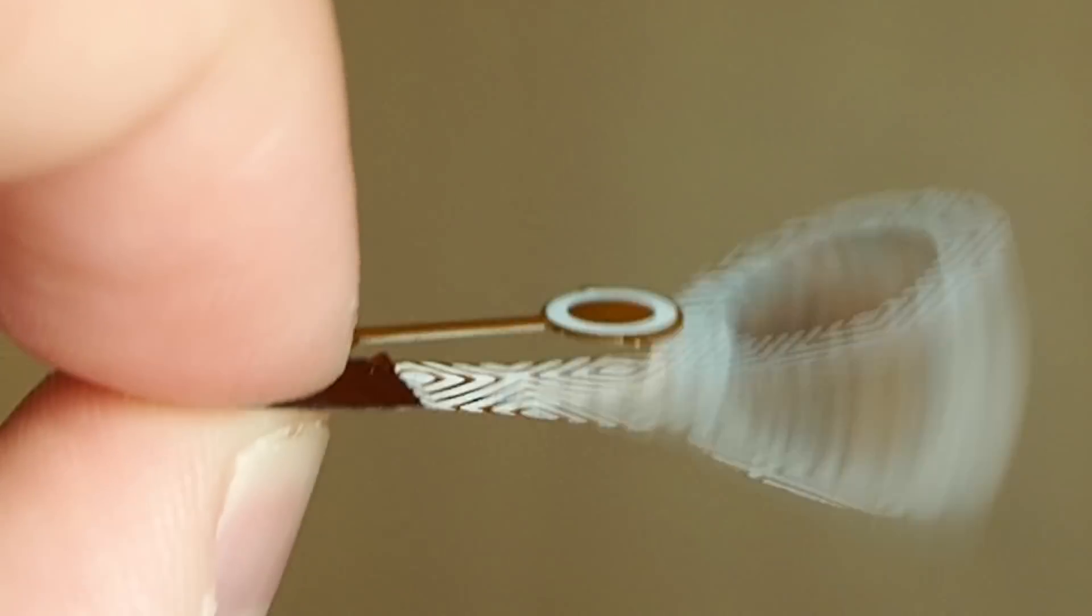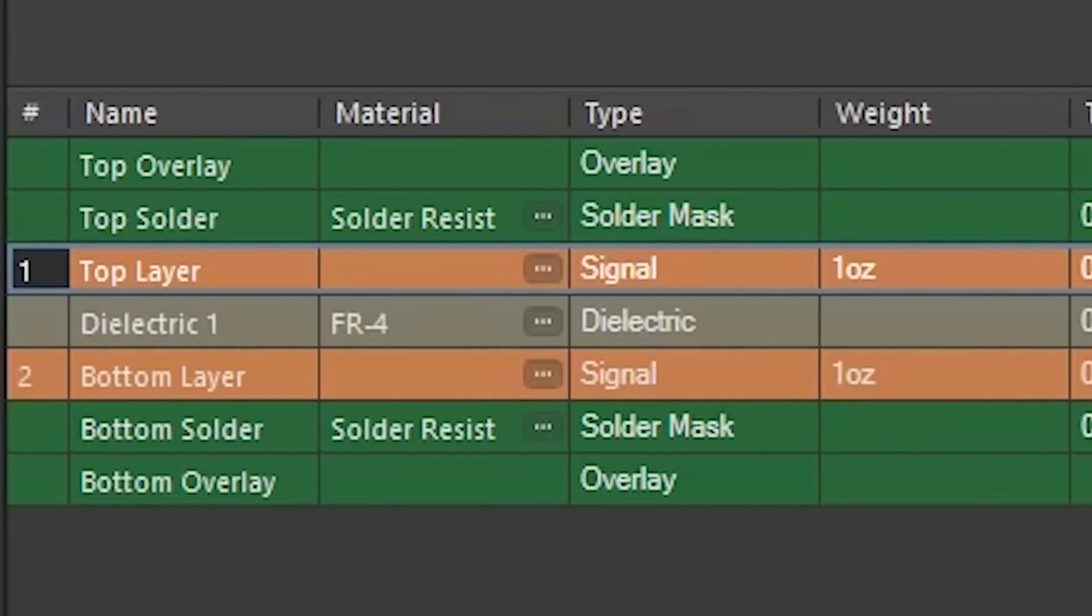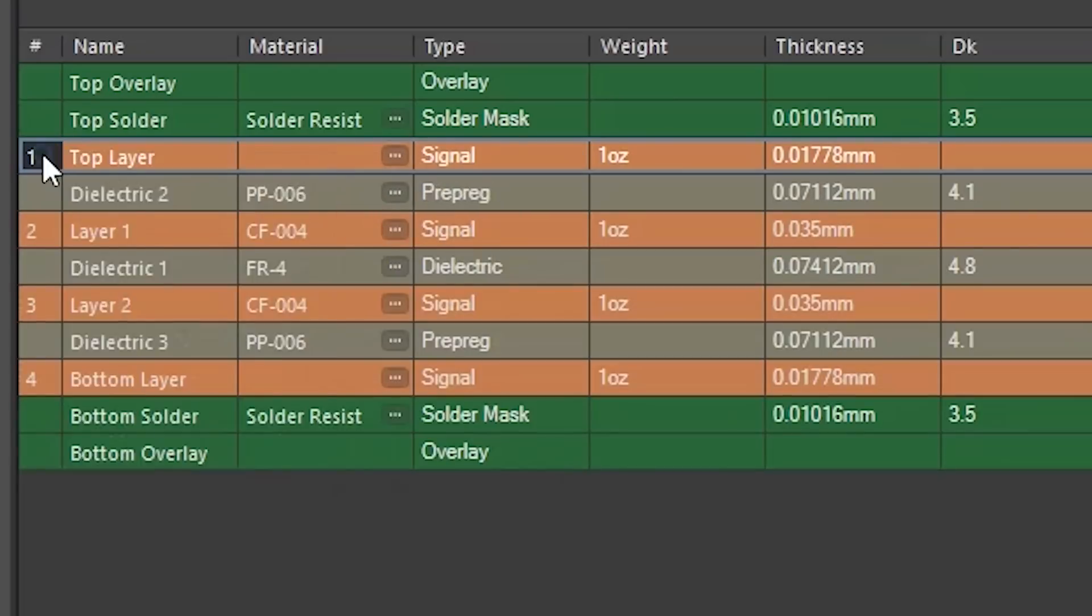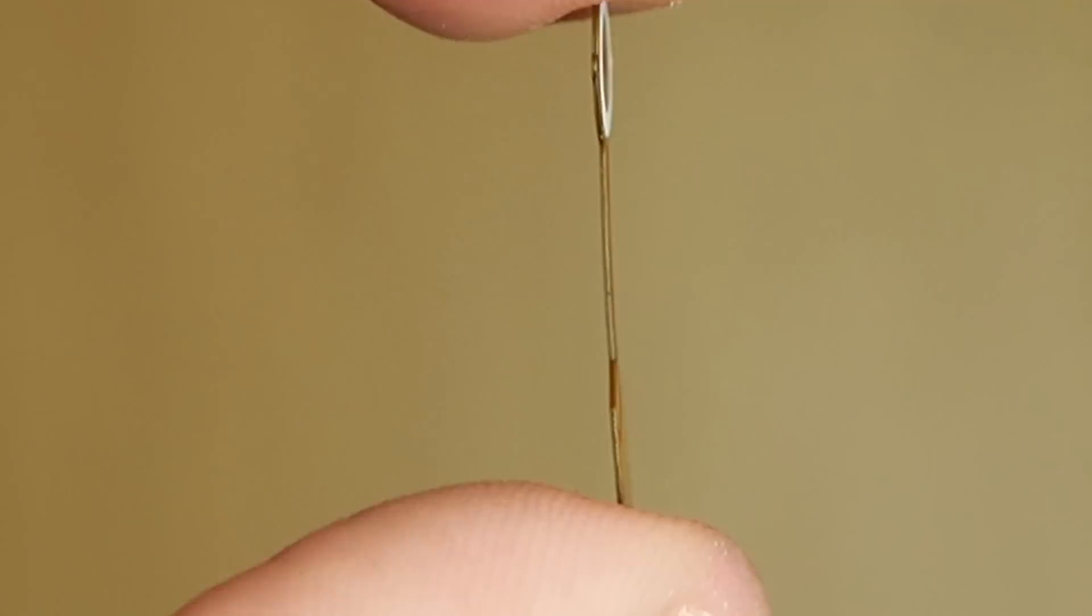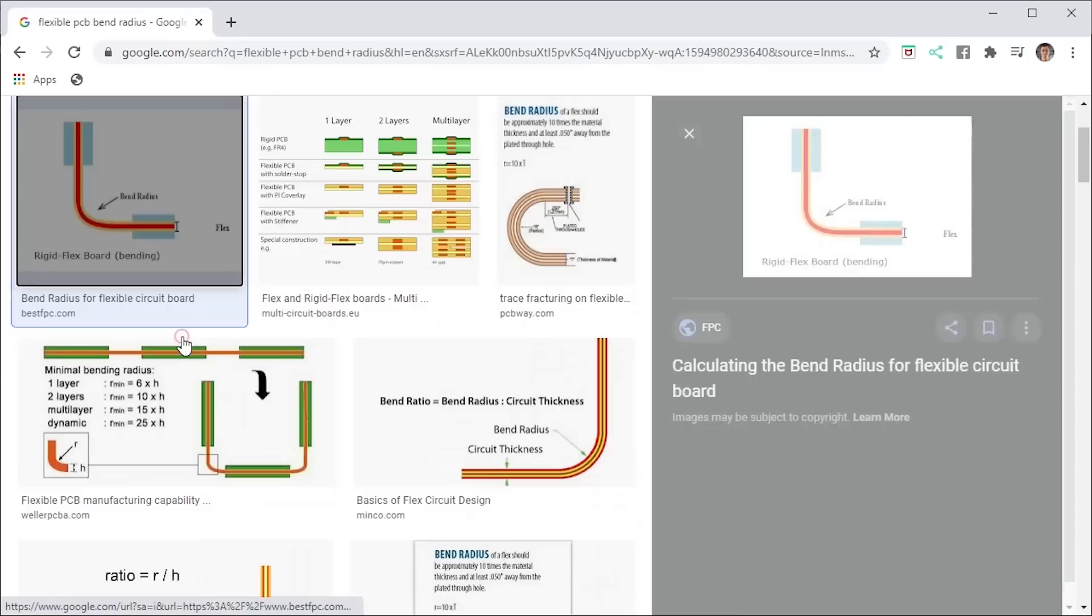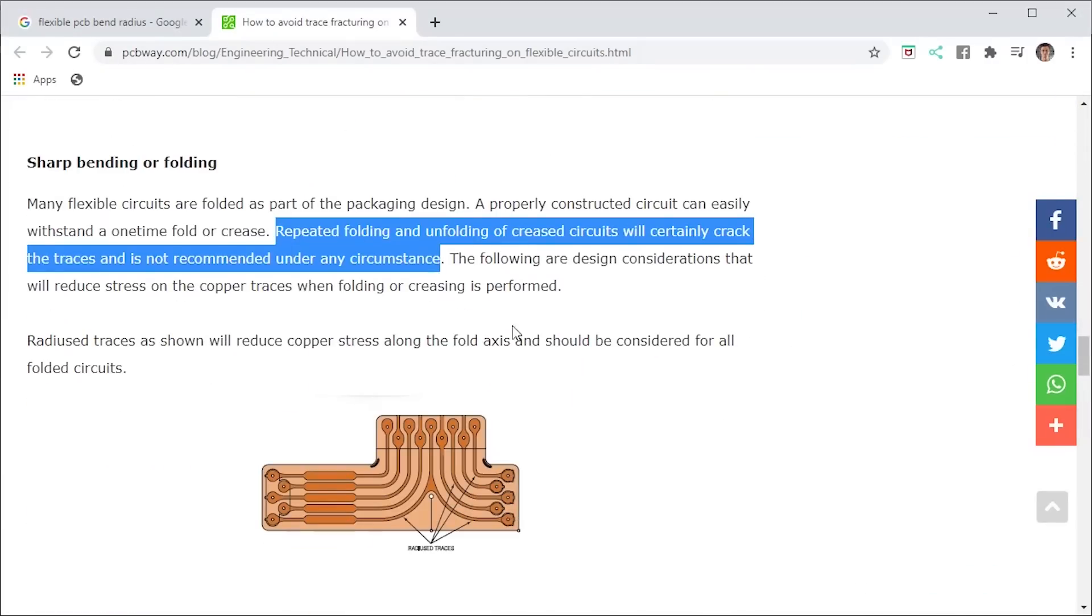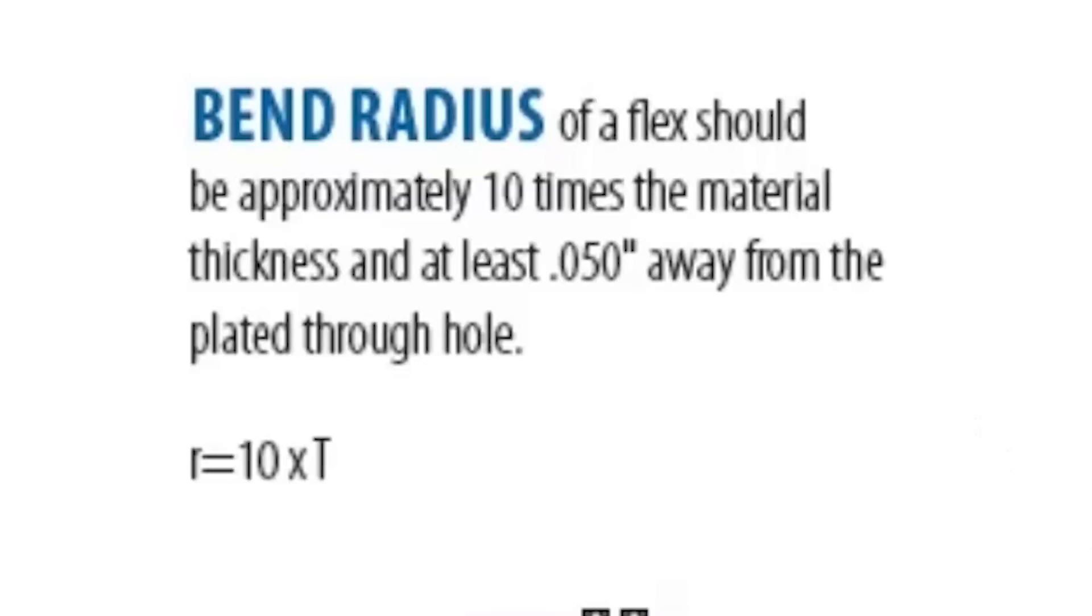Now let's talk about the stiffness. A PCB always seems to have a dielectric between two copper layers, so it makes sense that if we add more layers the thickness will increase. And that will also affect how much our flexible circuit can bend. I made some research on this topic and I found that generally you can use a bend radius that is 10 times the thickness.